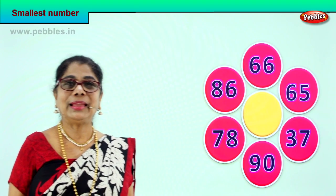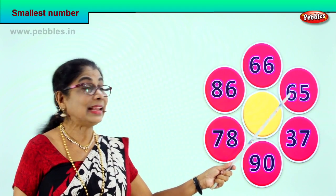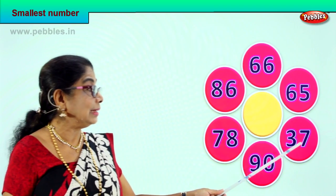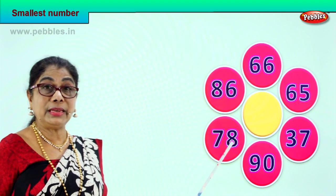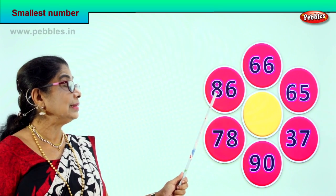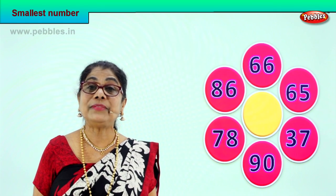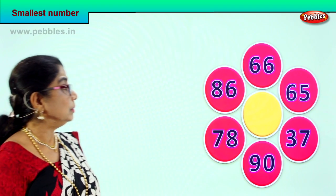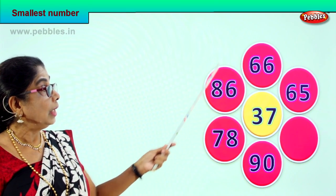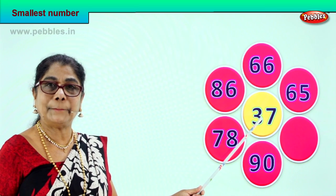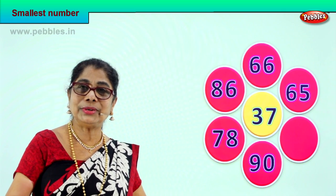Let's look at another set of numbers. 66 has 6 tens, 65 also has 6 tens, 47 has 3 tens, 90 has 9 tens, 78 has 7 tens, 86 has 8 tens. Which number has the least number of tens? That is 37 — only 3 tens. So among all, 37 is the smallest. We put that in the middle: 3 tens, 7 ones is the smallest among all these numbers.